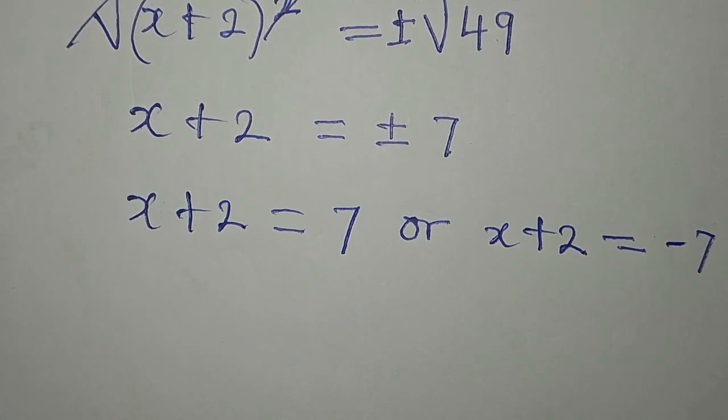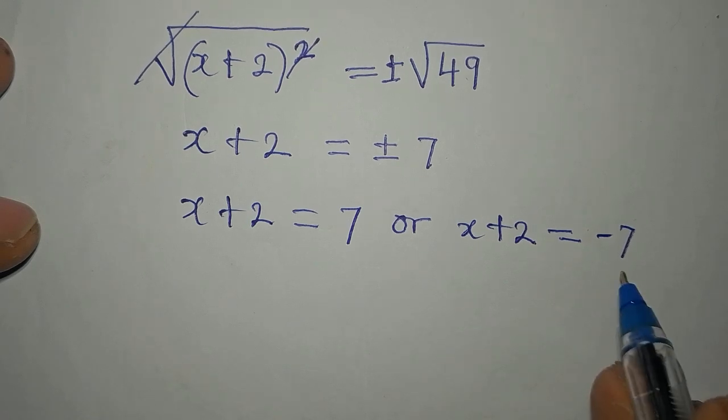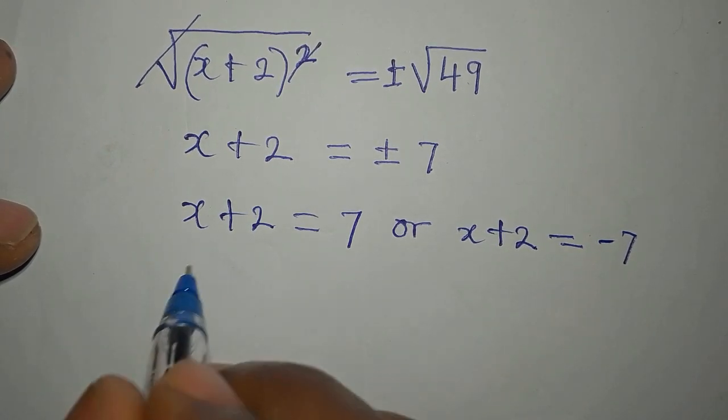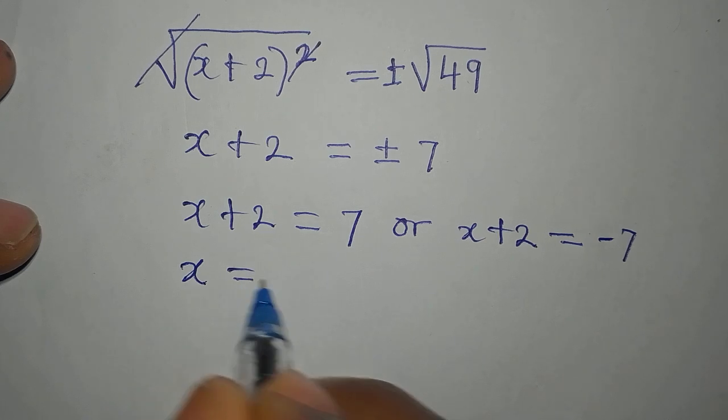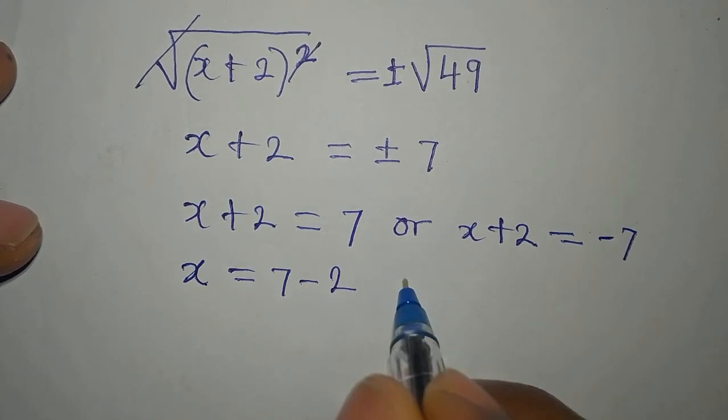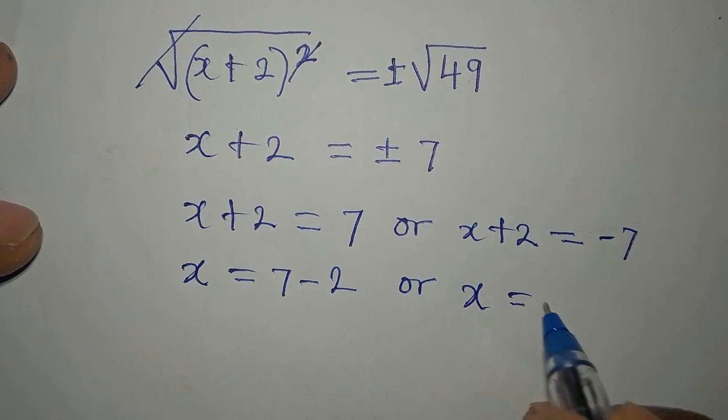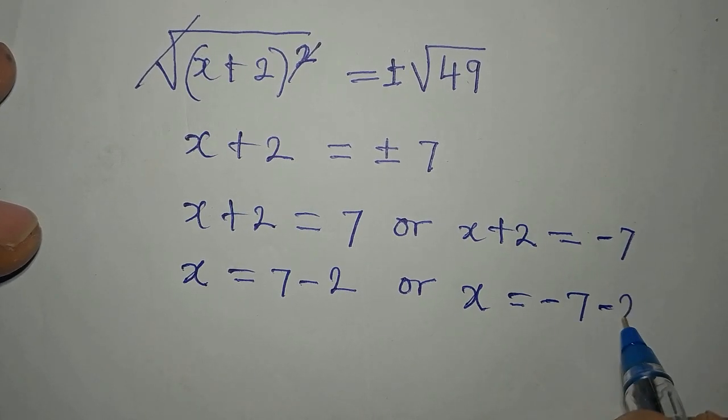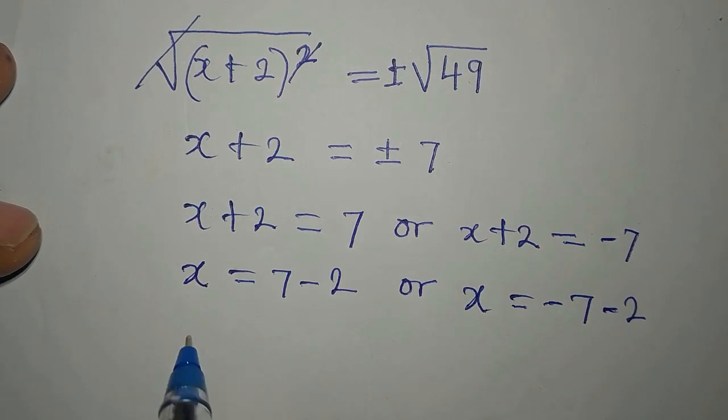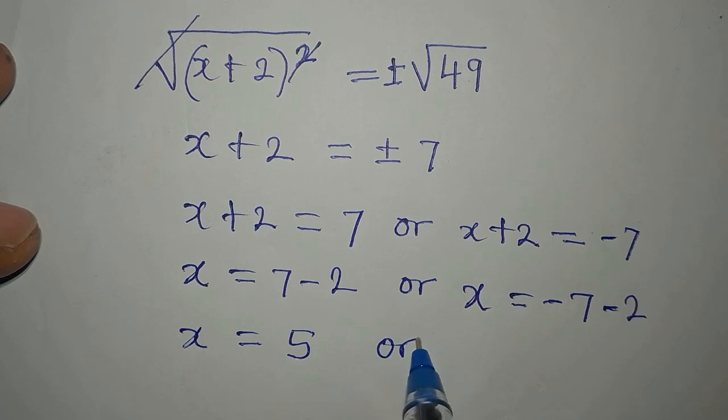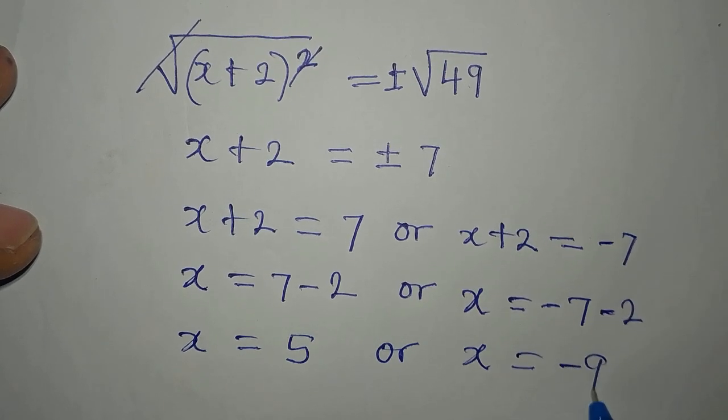Now let's deal with this first. Our x from here is equal to 7 - 2, or on this side x is equal to -7 - 2, meaning that x is equal to 5 or x is equal to -9.